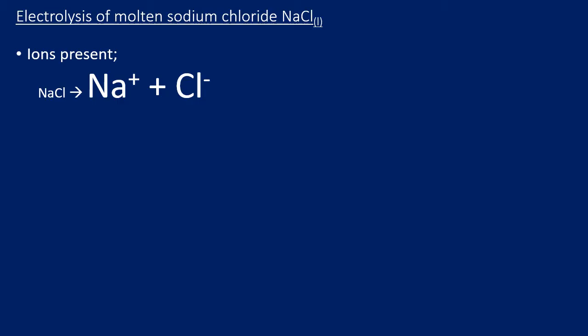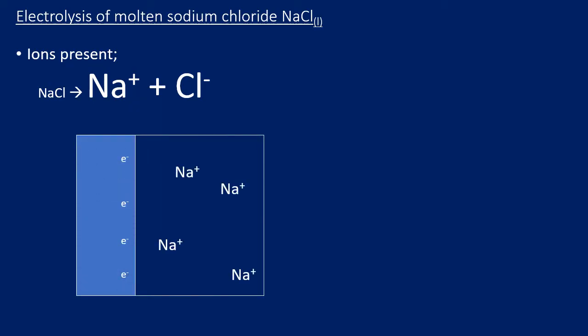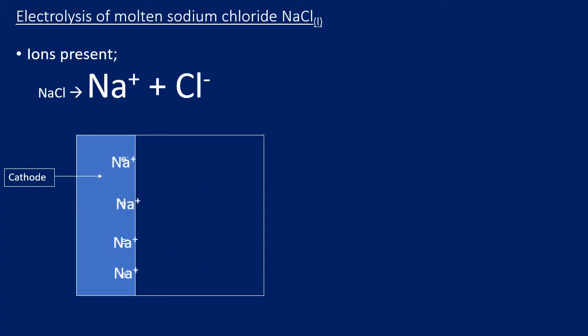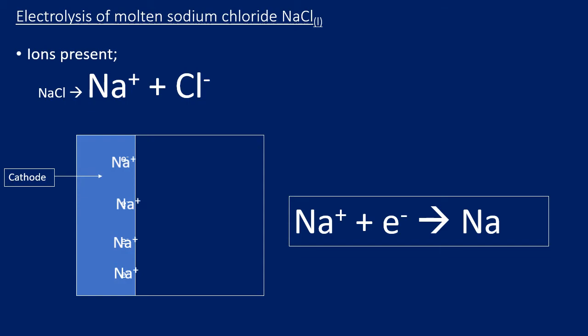The ions present are sodium ions (Na⁺) and chloride ions (Cl⁻) — sodium is in Group 1, chloride in Group 7. At the cathode (negative electrode), the positive sodium ions are attracted and gain electrons — electrons are gained at the cathode. They are discharged as the element: sodium metal. The half equation shows Na⁺ + e⁻ → Na. You would actually see liquid sodium metal formed at the cathode, as the temperature is very high to melt the sodium chloride.